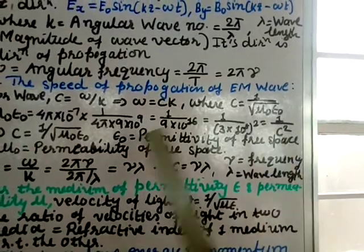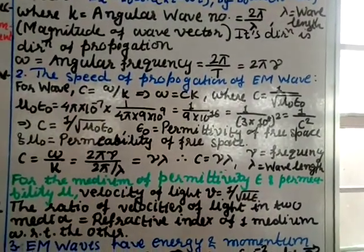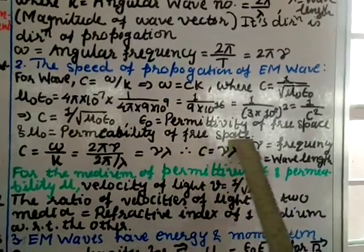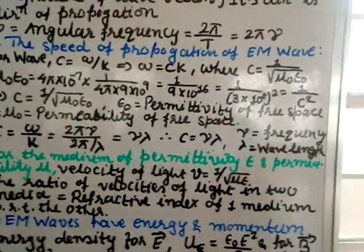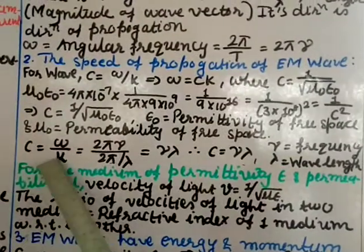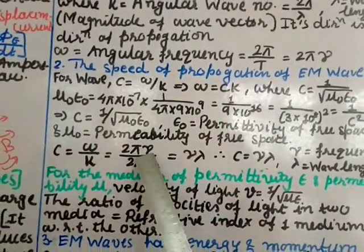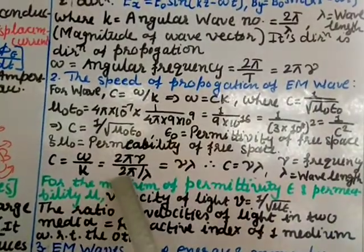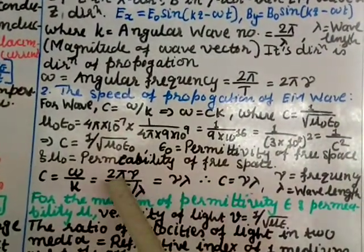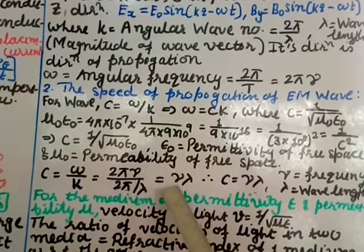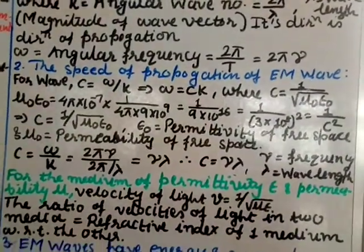Taking the reciprocal and square root gives C = 1/√(μ₀ε₀), where μ₀ is the permeability of free space and ε₀ is the permittivity of free space. Since C = ω/K, substituting ω = 2πν and K = 2π/λ, the 2π terms cancel and we get C = νλ, where ν is the frequency and λ is the wavelength.